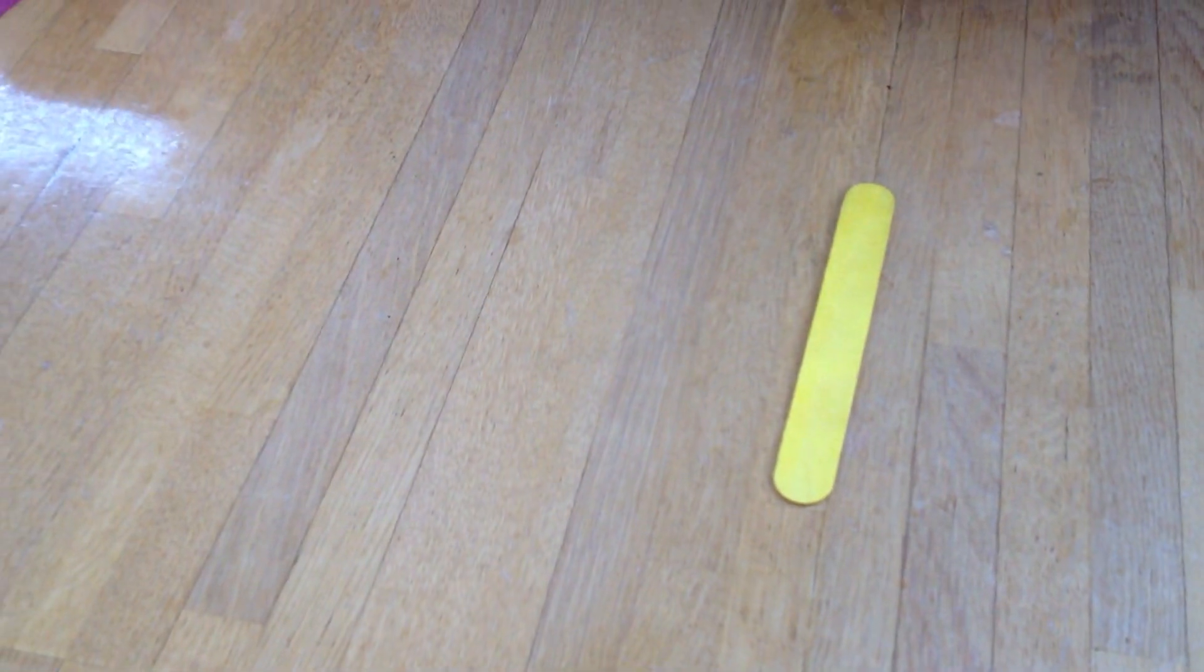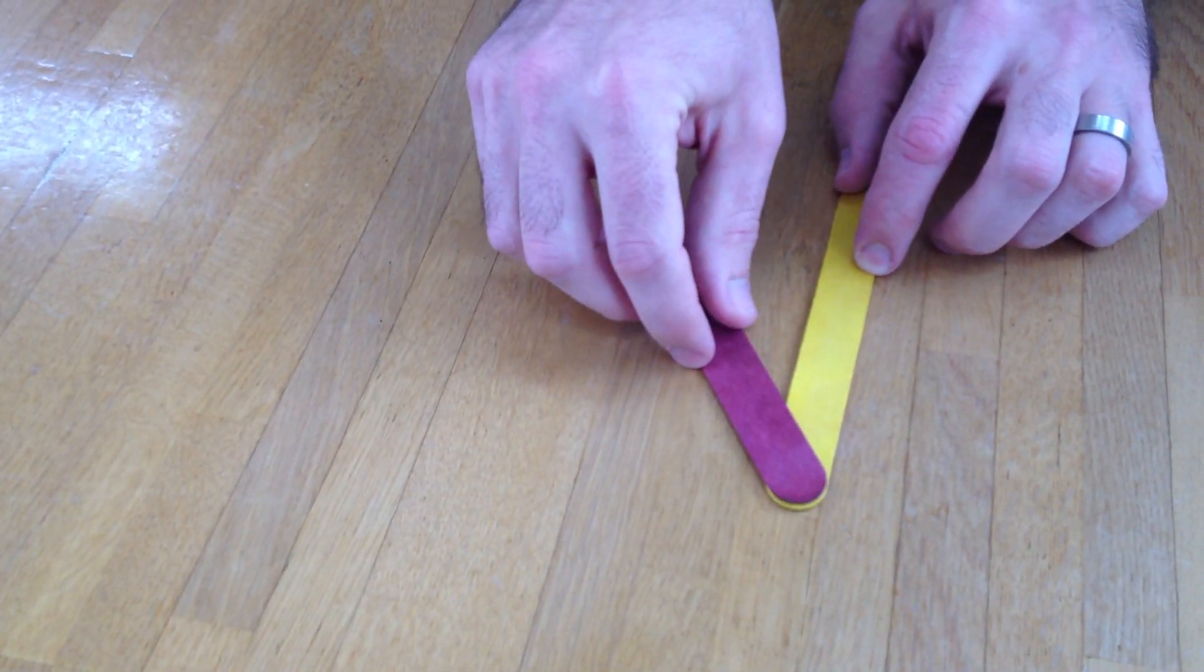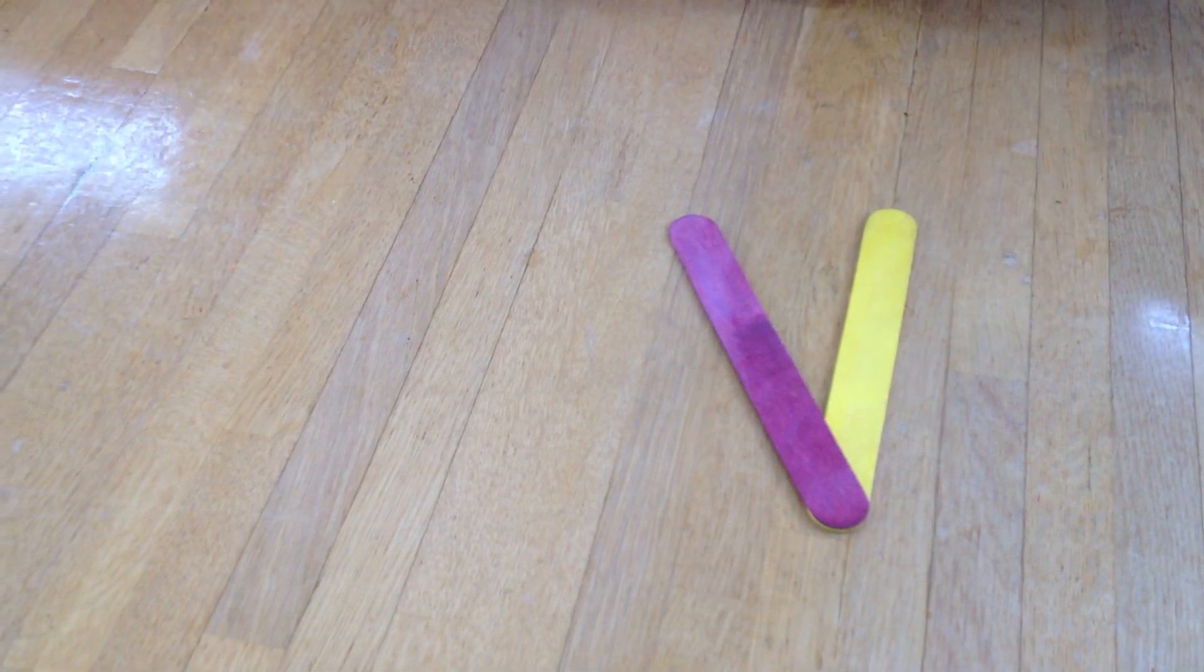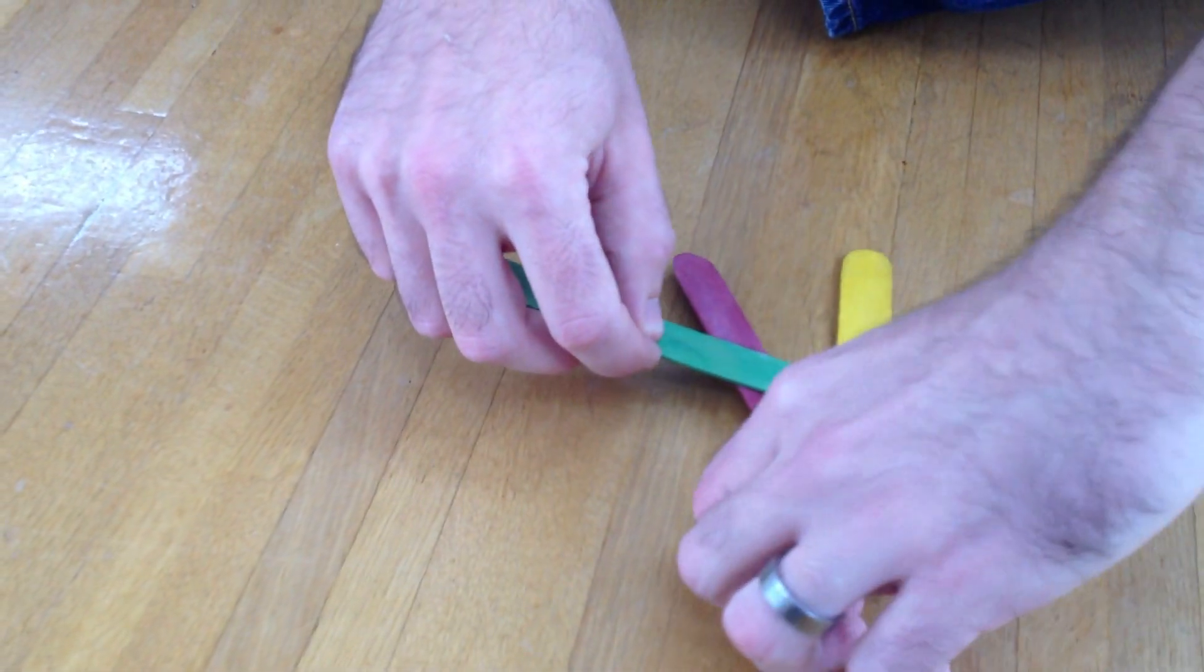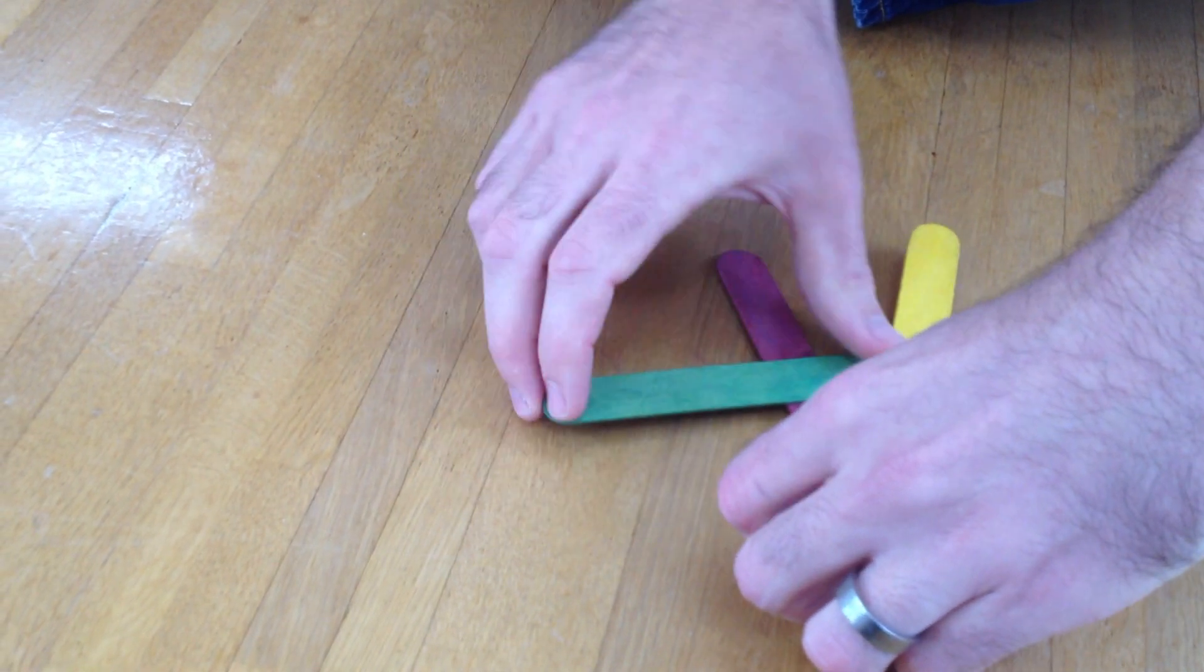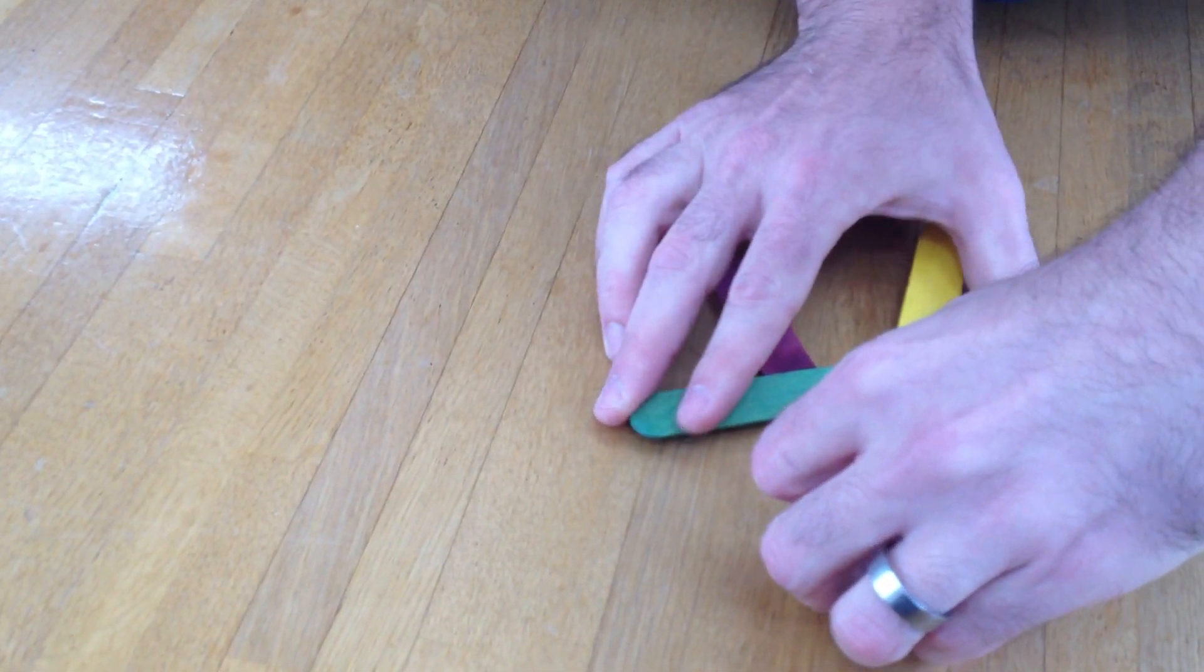Put the yellow one down first, put the red on top of the yellow, like this, and take the green. Put the green underneath the yellow but on top of the red, like this, sort of like an A.